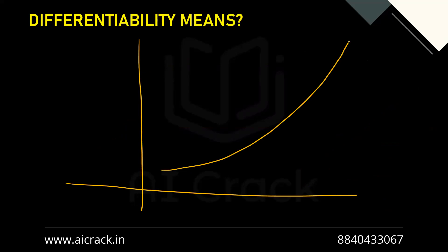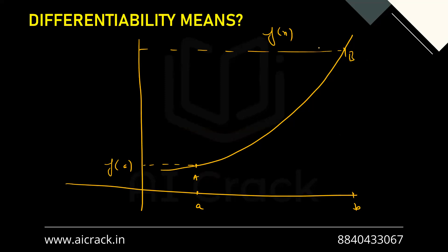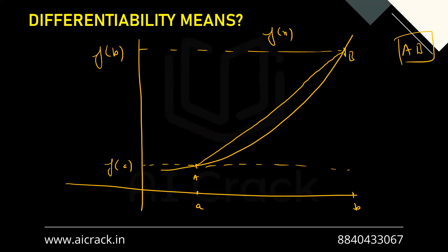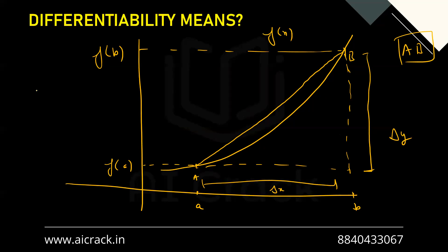We have the curve again with two points: point A with x-coordinate a, and point B with x-coordinate b. Since the function is f(x), the y-value at A is f(a) and at B is f(b). We find the average slope of the secant AB using delta y by delta x, which gives us f(b) minus f(a) divided by b minus a.